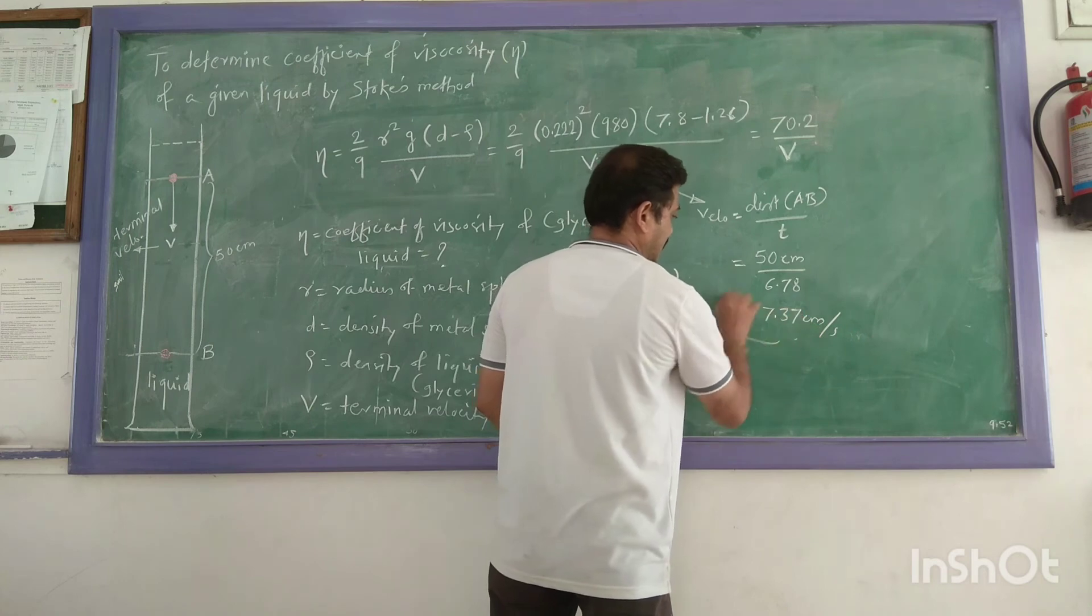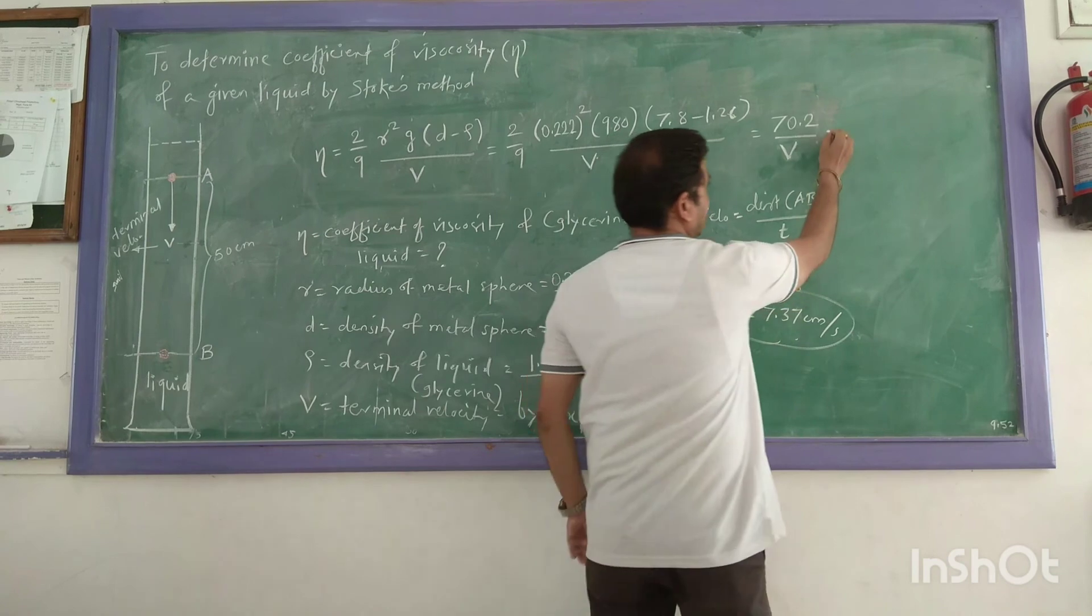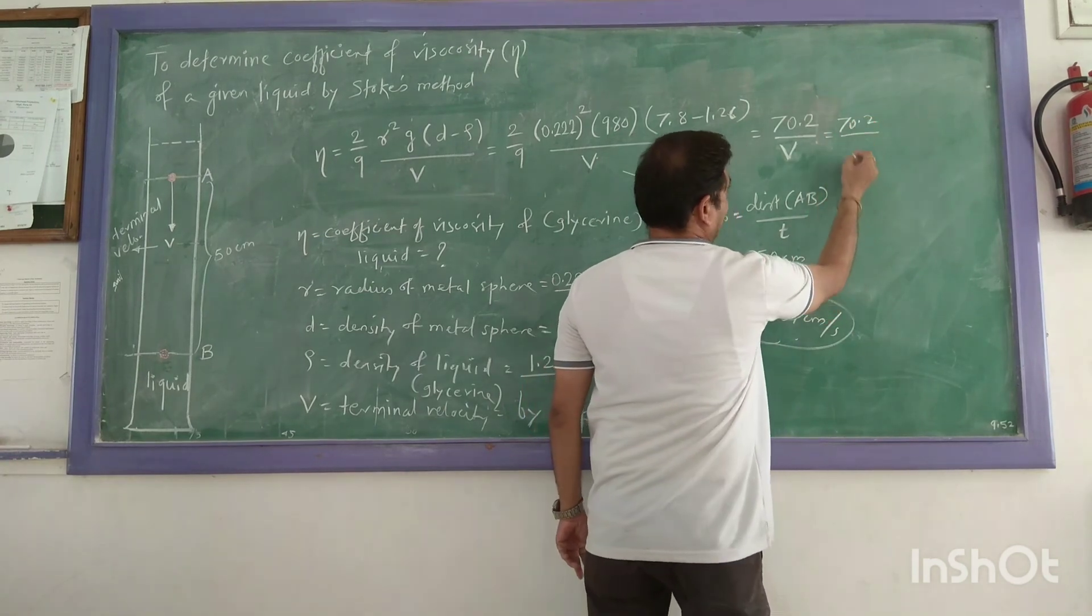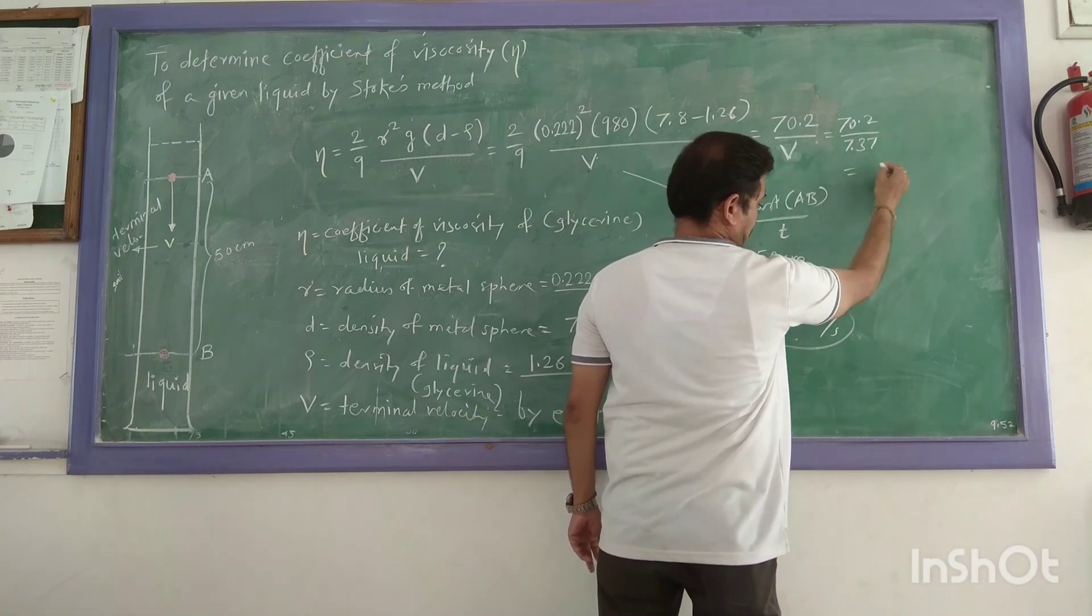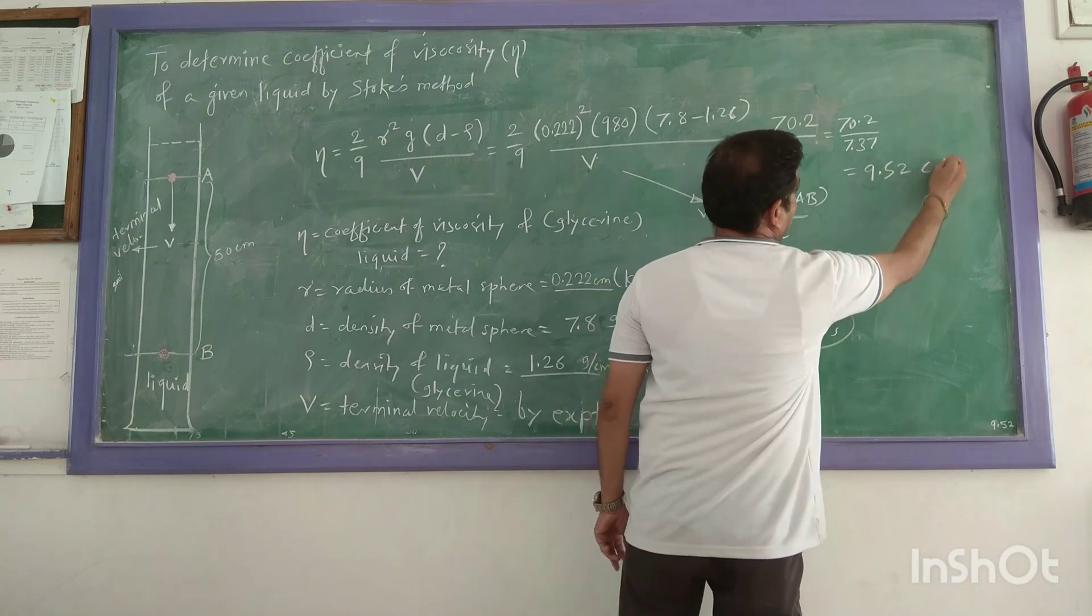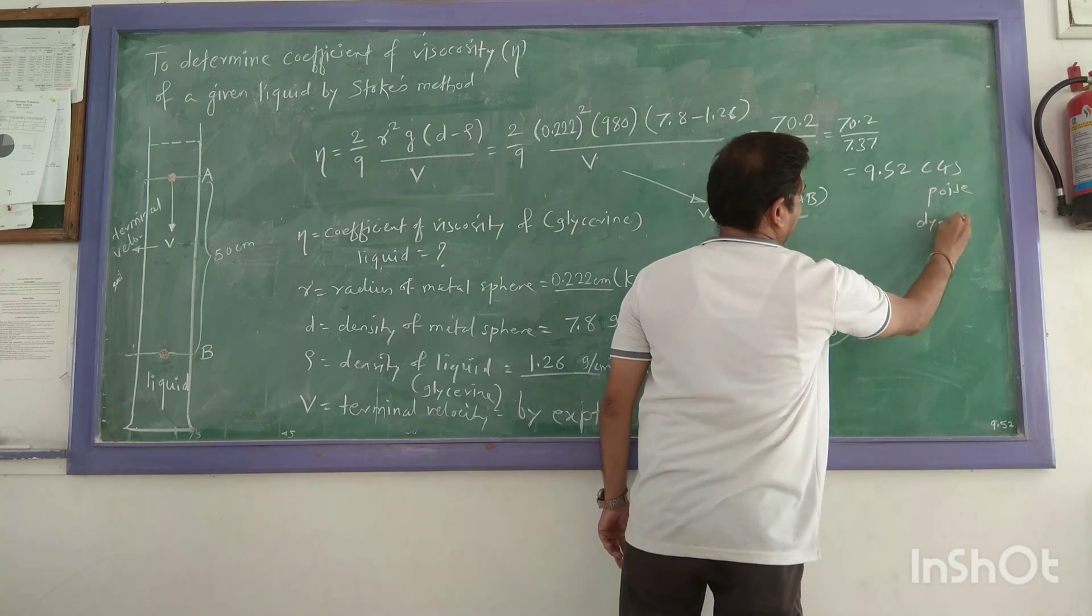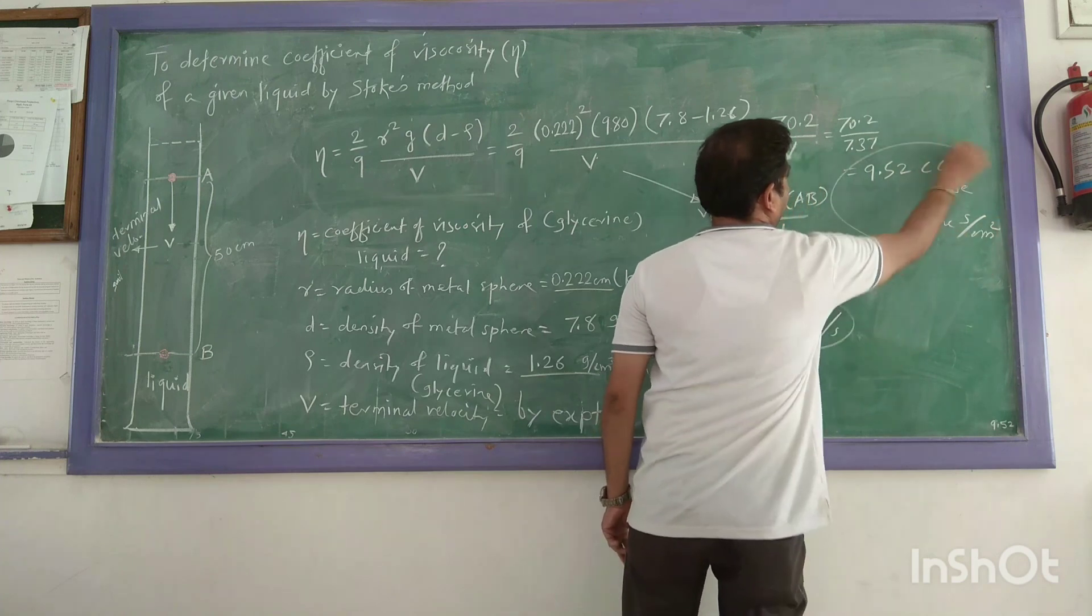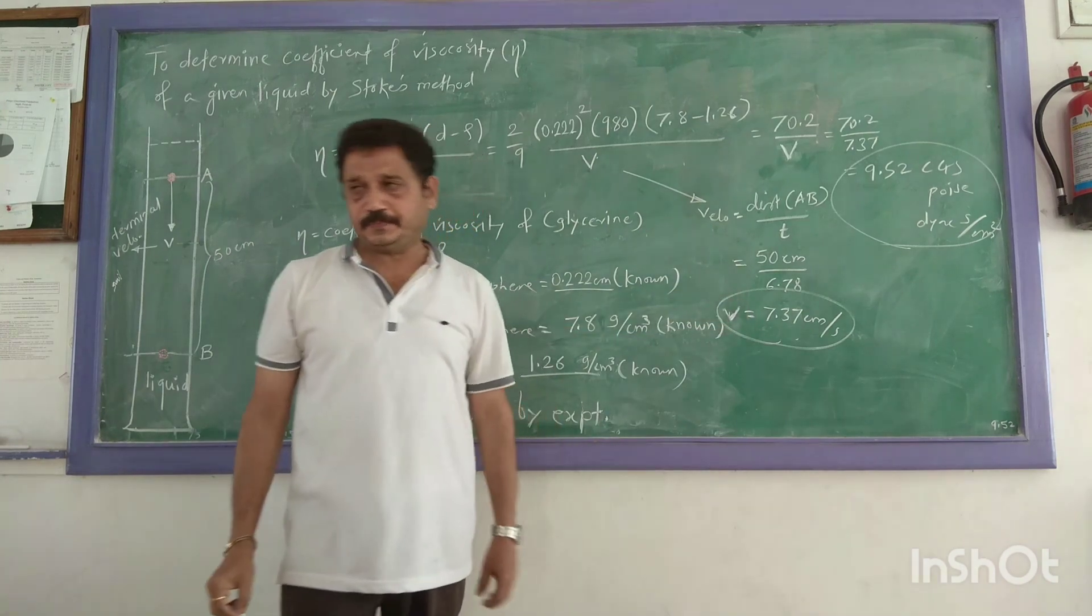This is the velocity. Now, put this value here. That is 70.2 divided by 7.37—that is with my terminal velocity substituted. And the answer is 9.52 in CGS units. That is dyne·second per centimeter square. This is my final answer. So, that will be enough. Thank you.